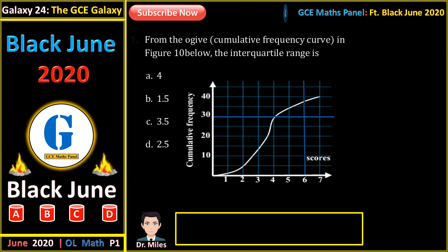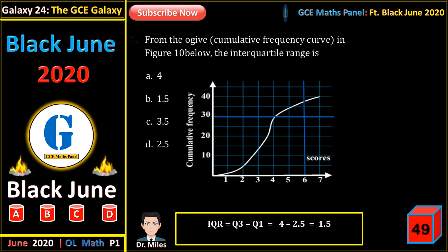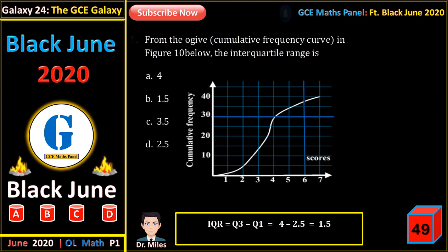From the ogive (cumulative frequency curve) in the figure, the interquartile range is? The interquartile range equals the upper quartile Q3 minus the lower quartile Q1. The upper quartile is the 75th percentile and the lower quartile is the 25th percentile. When the cumulative frequency is 30, we read off 4. When the cumulative frequency is 10, we read off 2.5. So the interquartile range is 4 minus 2.5, which is 1.5.